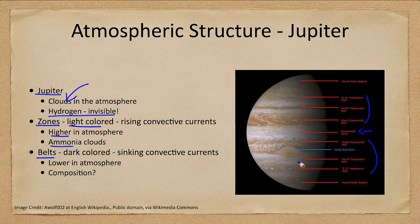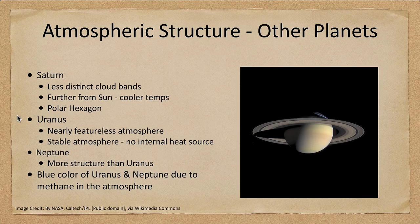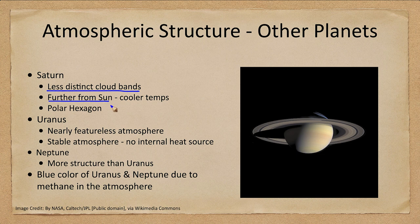We also see the great red spot, which we will talk about later on. Looking at Saturn, we see a similar type of structure, but less distinctly — lighter and darker bands are visible. Because Saturn is further from the sun, temperatures are cooler and the cloud layers are buried deeper in the atmosphere under more haze, making them harder to see.